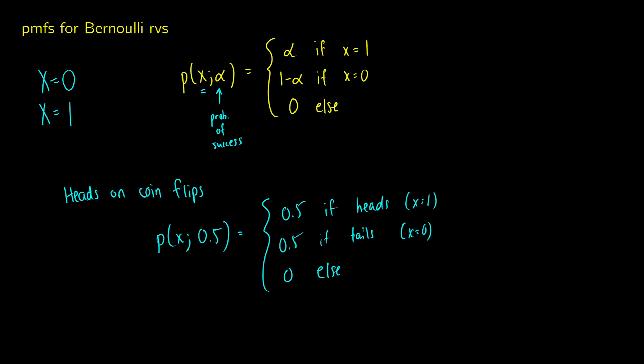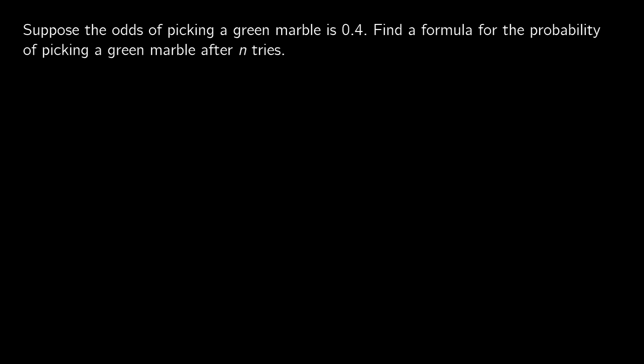Let's take this notion and think about a problem. Suppose the odds of picking a green marble is 0.4. We want to find a formula for the probability of picking a green marble after n tries. In other words, however many tries it takes us to finally get that green marble. So our PMF for this is x, and when it's a success, it occurs with a 0.4 or 40% chance.